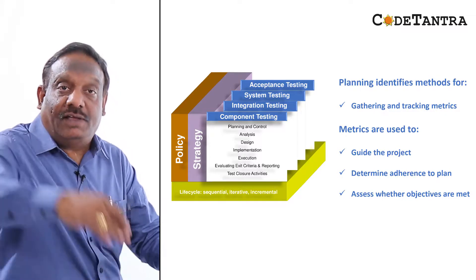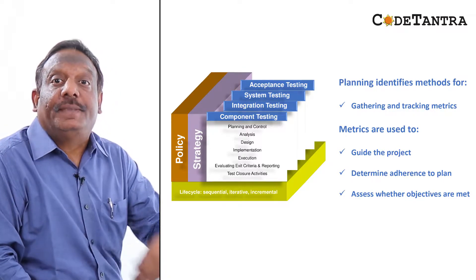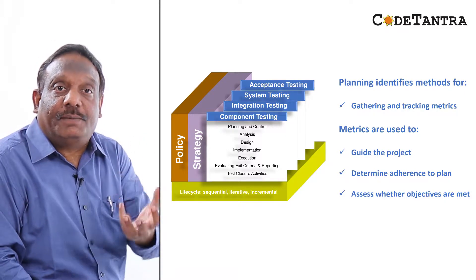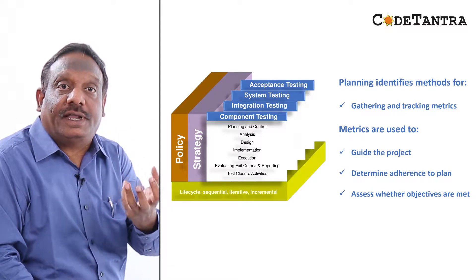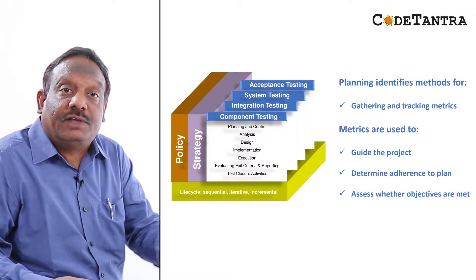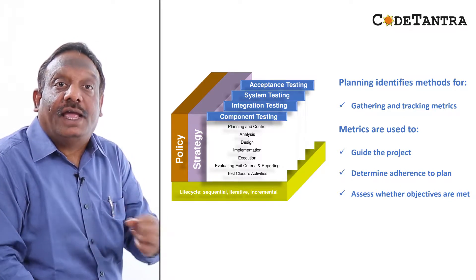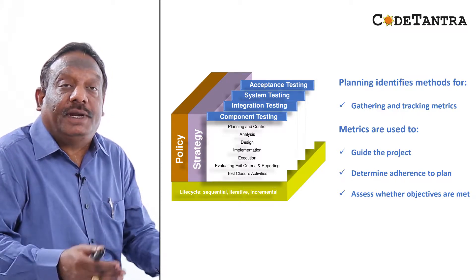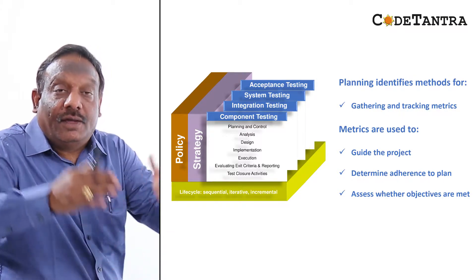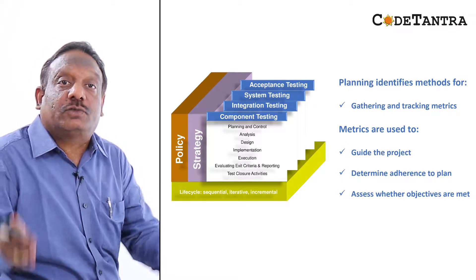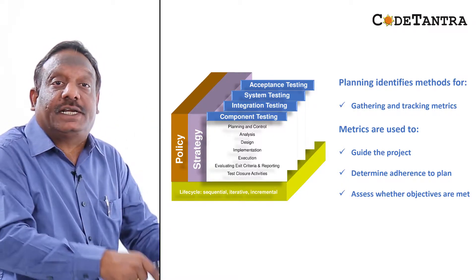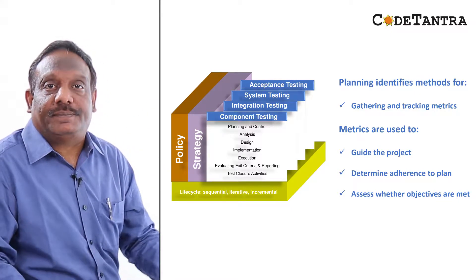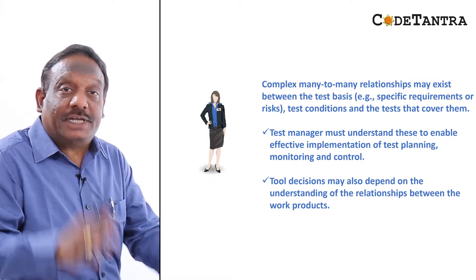Identifying, gathering, and tracking metrics is an extremely important activity for monitoring and control, which is a very important test management activity. Metrics are used to guide the project and help you determine whether you are adhering to the plan or not. They also help you assess whether the objectives stated in your test strategy are met or not.